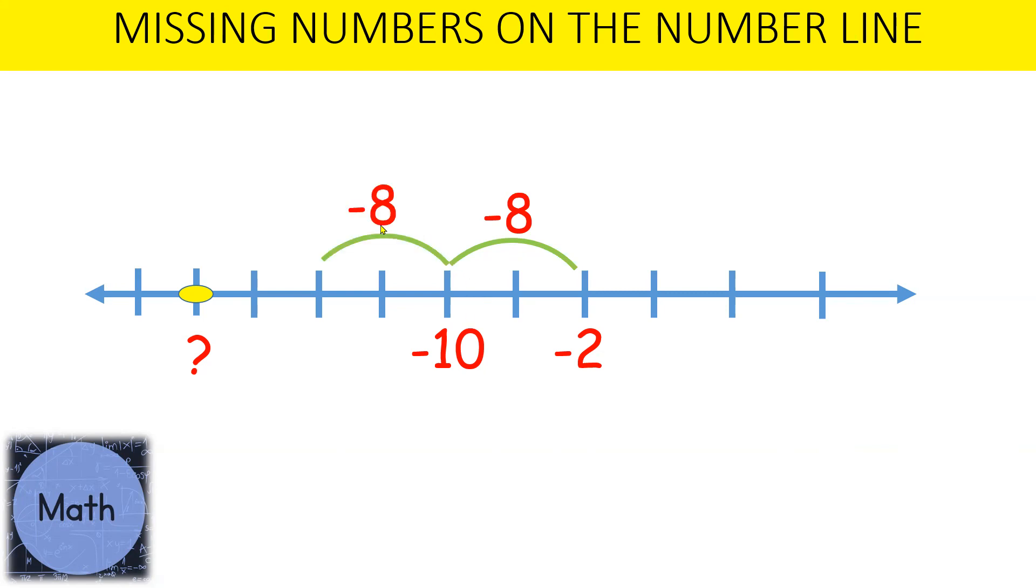If we do that again, moving to the left because it's negative, this space over here is minus 8. Now negative 10 plus minus 8 would give us minus 18, and negative 18 plus minus 8 would give us the missing answer of minus 26.